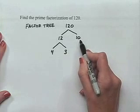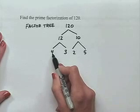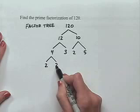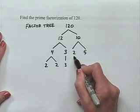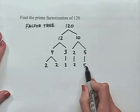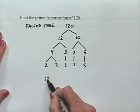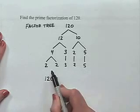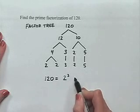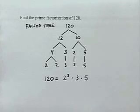I do the same thing with 10: 10 is equivalent to 2 times 5. Now, 4 is still not a prime number, so I'm going to write it as its prime factors, 2 times 2. Looking at all the prime factors, we rewrite in ascending order using exponential notation. We have 2 times 2 times 2, which can be written as 2 cubed, times 3 times 5. That's the prime factorization of 120.